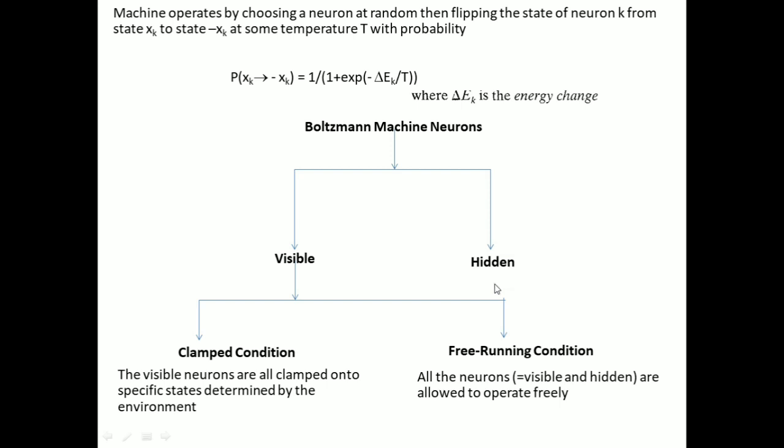Why? Because the neurons in the hidden layer do not take part in the output. So they only run in the free-running condition. All the neurons in the hidden group are allowed to operate freely.